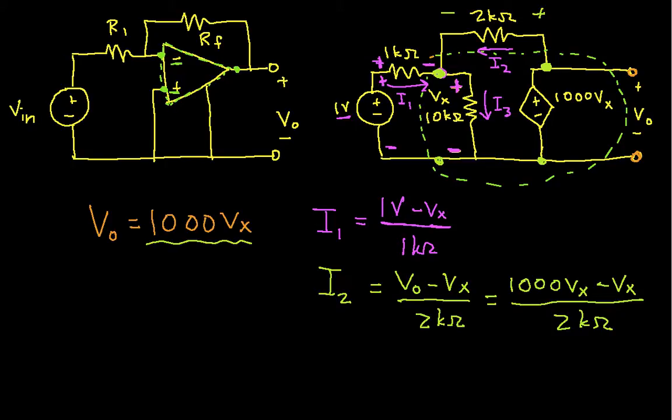Now, finally, to get I3, I know the voltage across this 10k ohm resistor, it's Vx. And so, I can just write Vx over 10k ohms. So the idea here is I've computed the currents going into and out of this node.